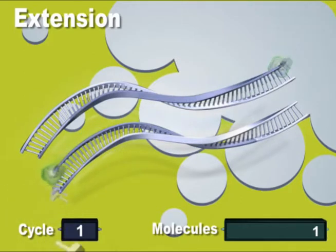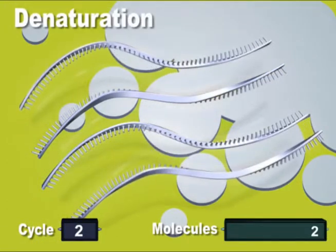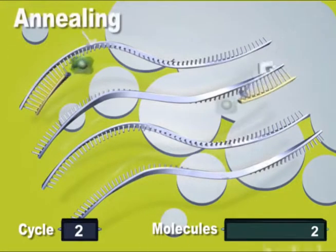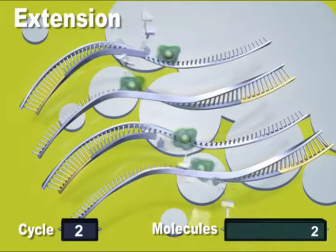As you can see, as this process repeats, we are doubling our DNA each time. This is the basis of PCR. With each new cycle, the process of denaturation, annealing, and extension repeats again and again.